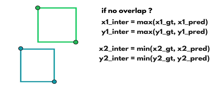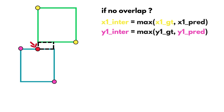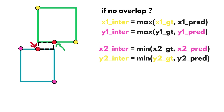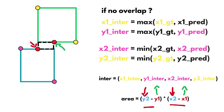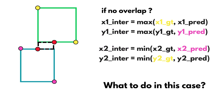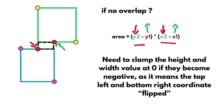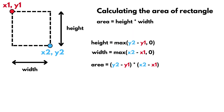What happens with our four formulas if there is no overlap? We're going to get that x1 for the intersection is the ground truth, and y1 is the prediction, which puts our top left point roughly in the bottom left corner — a good indication that something will be off when calculating the area. For x2, we get the prediction x2 (which is the smallest), and y2 ground truth (also the smallest), putting our bottom right at the top right. In this scenario, the width and height are both negative. What we need to do during our IOU calculation is clamp the height and width values at zero. If they become negative, it means the top left and bottom right coordinates have flipped — our indicator that we are in a no-overlap zone. Therefore, we can modify the formula to clamp negative values to zero, and we should be good to go.